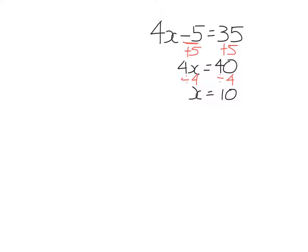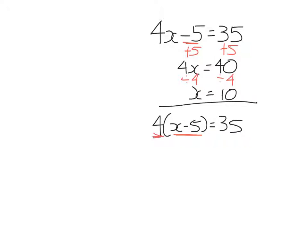Now I'm going to change this equation slightly by putting brackets in. This changes the order of operations, and if you change the order of operations, the answer will be different. So now what I've done to x is first subtract 5, then times by 4. To undo this, I first undo timesing by 4 by dividing each side by 4. The 4s cancel, leaving x minus 5 equals 35 divided by 4, which is 8.75. Then I undo subtracting 5 by adding 5 to each side, and I get x equals 13.75.